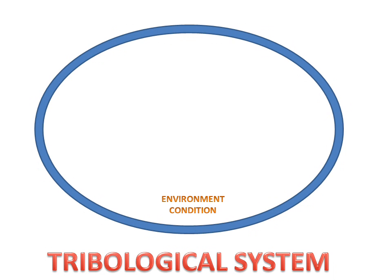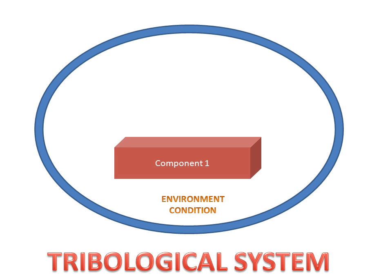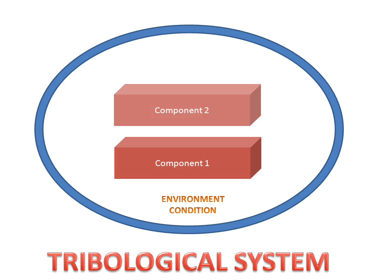Today we will discuss the tribological system. What is a tribological system? We have an environment condition, a component 1, and a component 2. In between these components we have a lubricant film.